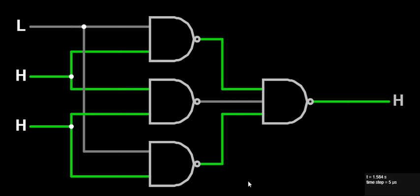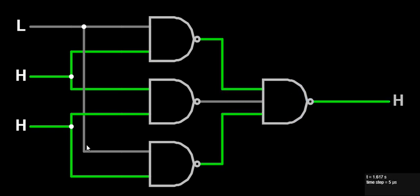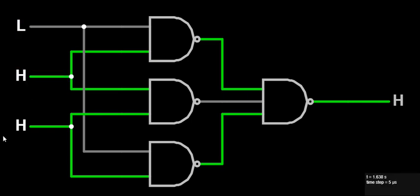What is the importance of that? If the number of zero inputs or number of one inputs is more than half of the total inputs, then the output will change according to the majority of the input. In simple terms, if high input is two and low input is one, then the majority is high, so the output will be high.